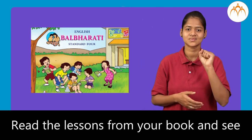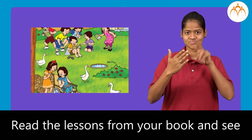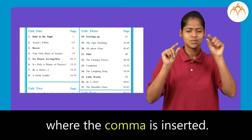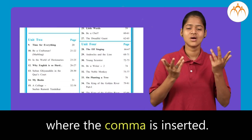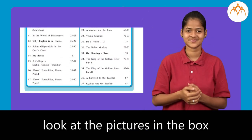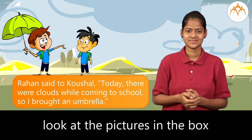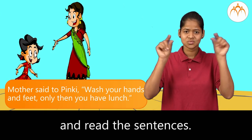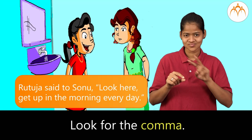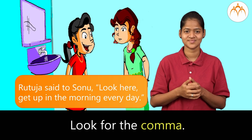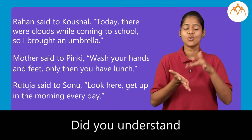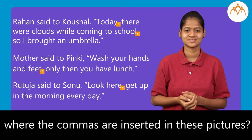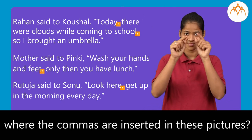Read the lessons from your book and see where the comma is inserted. Now, look at the pictures in the box and read the sentences. Look for the comma. Did you understand where the commas are inserted in these pictures?